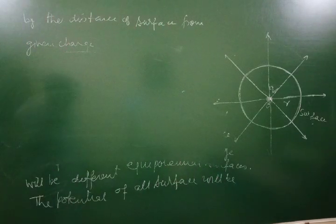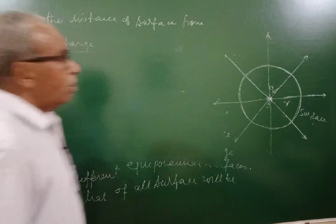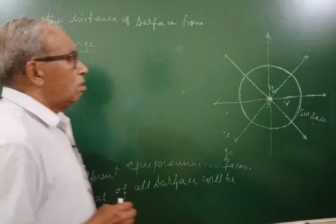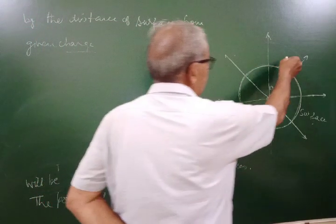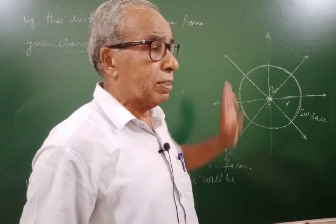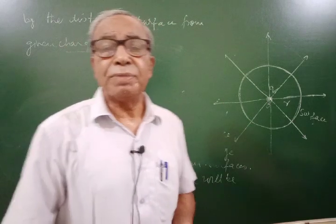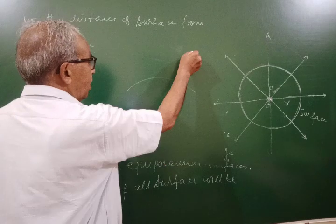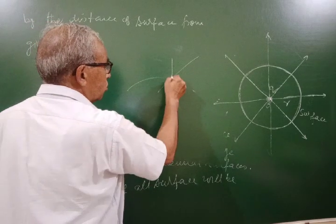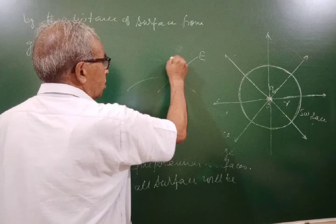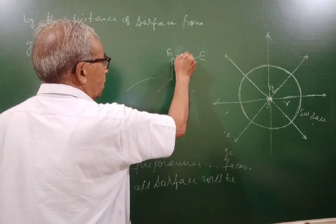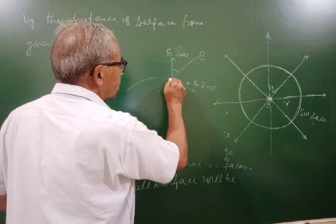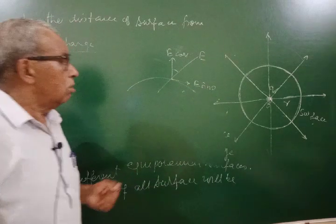We can prove this in many ways. If the electric field has a component along the surface — meaning the field is not perpendicular to the surface — then there will be a component of electric field along the surface. We can resolve the field E into two components: E cos theta perpendicular to the surface, and E sin theta along the surface. This E sin theta component would tend to move a charge along the surface.